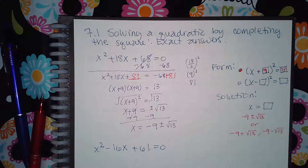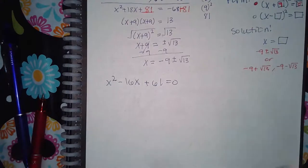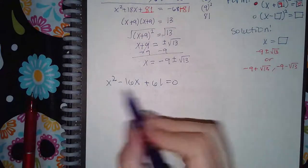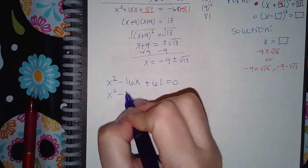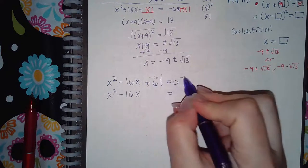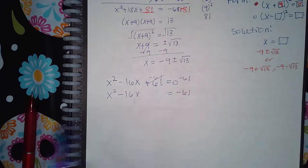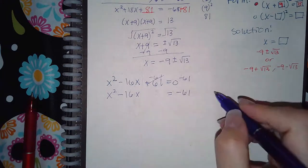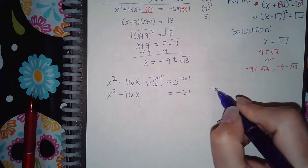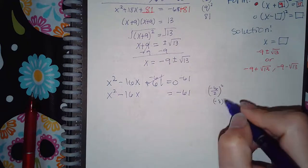Okay, so I do have to isolate these two terms, and to do that I'm going to have to minus 61 on both sides so I get negative 61 on the right hand side. Now B is a negative 16 in this case, so B over 2 squared is negative 8 squared which is positive 64.